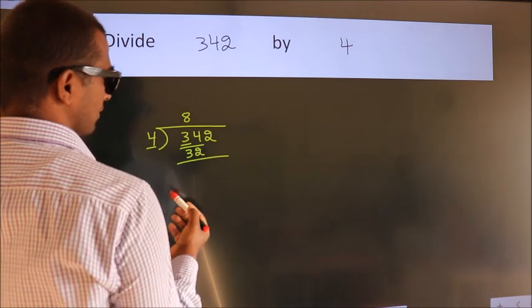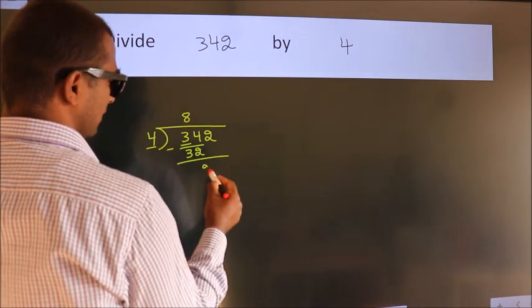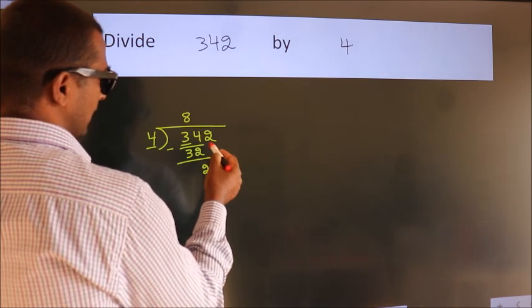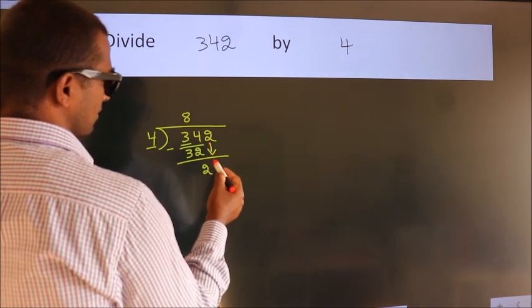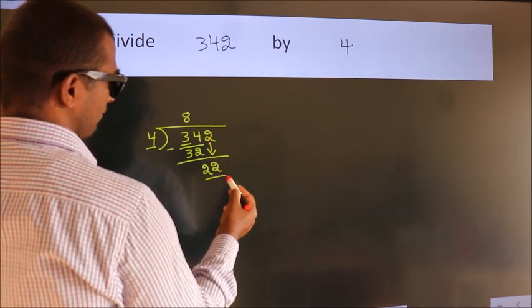Now we should subtract. We get 2. After this, bring down the number beside it. 2 comes down, so we have 22.